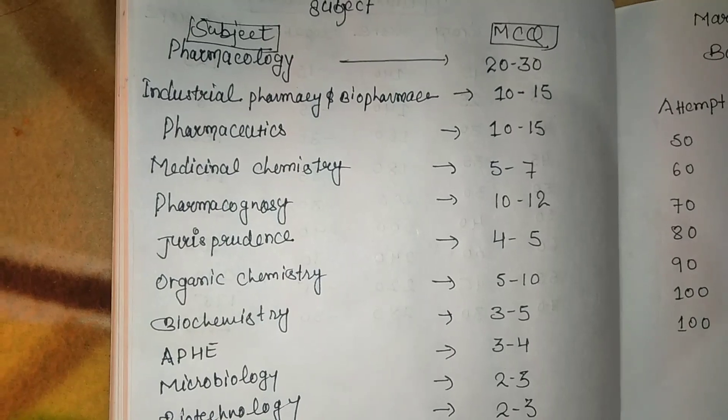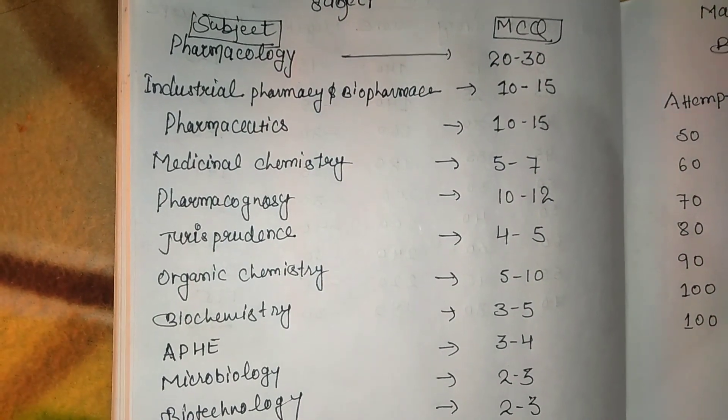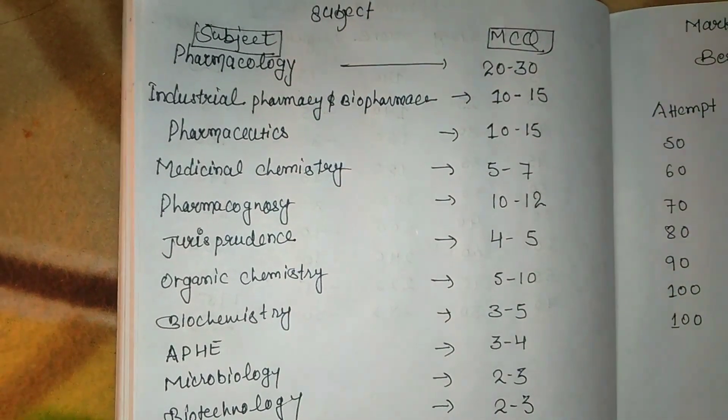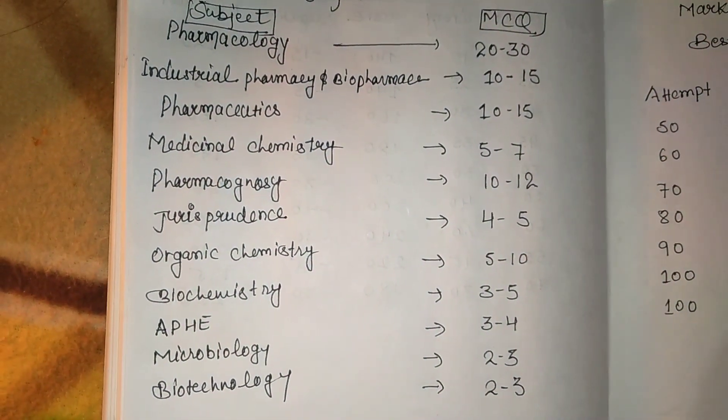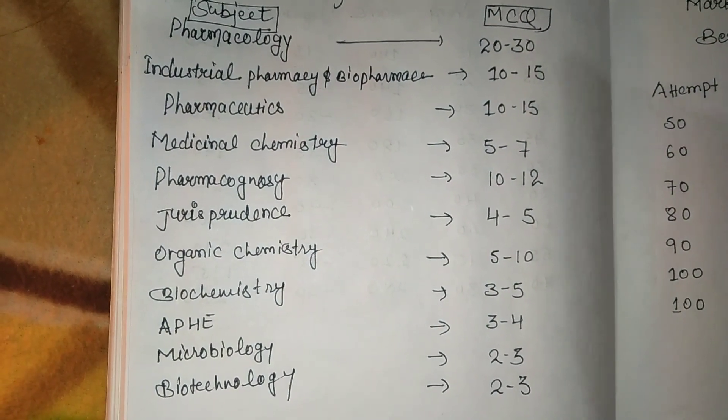So guys, you can see how many MCQs are coming from each subject. You can see how many MCQs are coming from the pharmacology section - 20 to 35 MCQs arise. And pharmacognosy, which is biological source, chemical constituent, and leaf content.